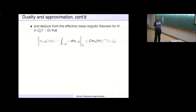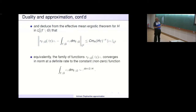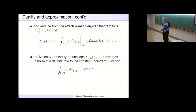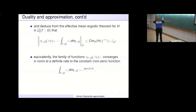We deduce from the effective mean ergodic theorem that the L^2 norm of the difference converges to zero at a certain rate. The averages of phi_epsilon converge in L^2 at a definite rate to the constant function — essentially the volume of O_epsilon, which is epsilon to the dimension. This is obvious to everybody who has seen the ergodic theorem: the ergodic averages converge to a constant. In our case, they do so at a certain particular rate.